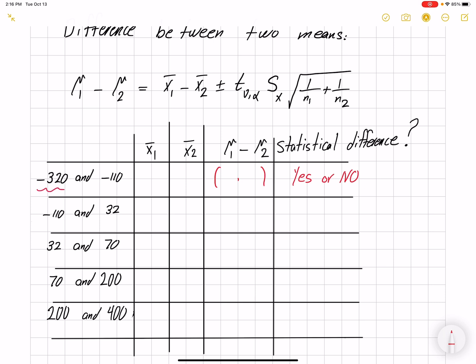You're going to get the average value for the first temperature and the second temperature. Then you want to find the population means. The equation will give you a range of values because of the plus-minus sign. If that range includes zero, there is no statistical difference.